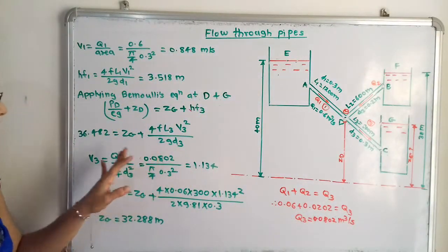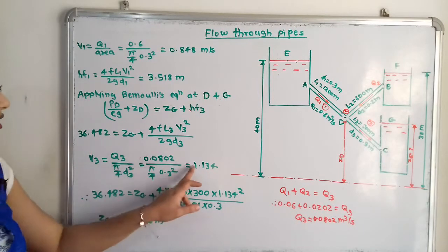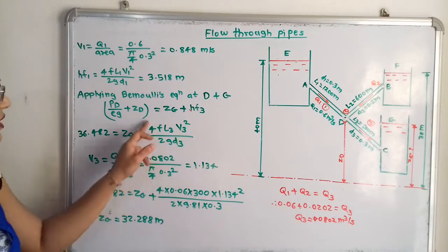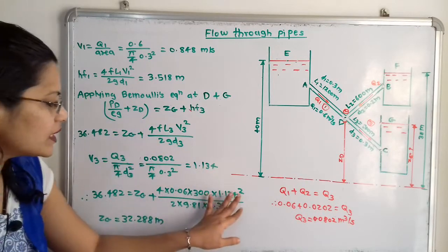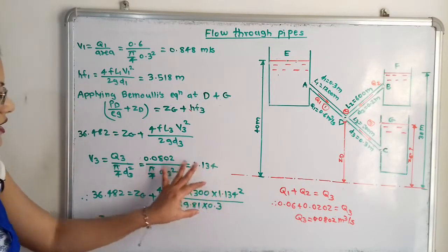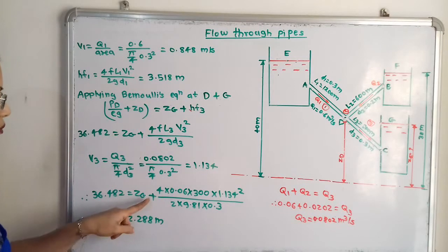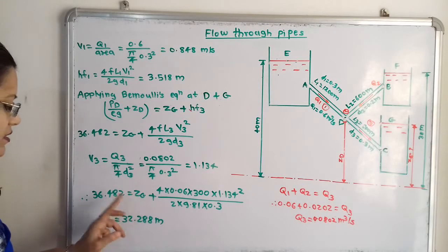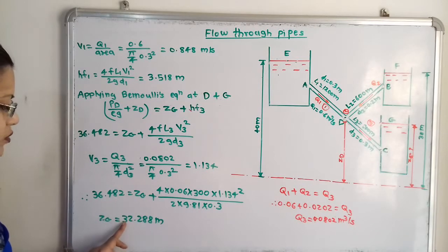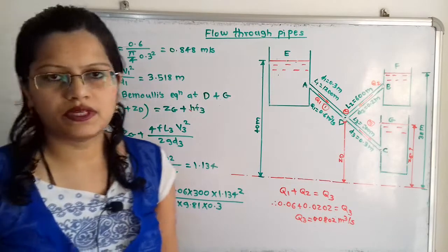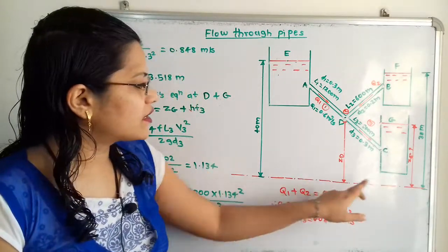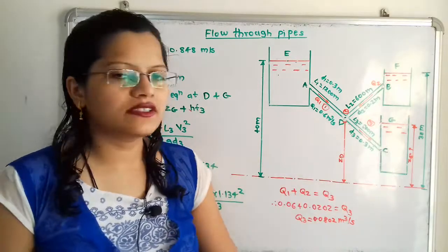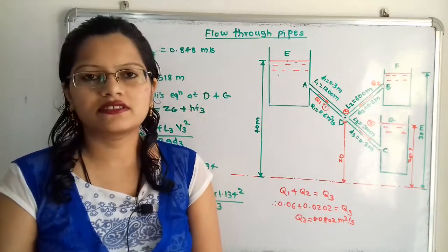Using V3 = 1.134 m/s in the Bernoulli's equation: piezometric head at D (36.482 m) = Z_G + HF3. Solving, Z_G = 32.288 m. This is the height from the datum line to the free surface water level in reservoir C, and this is the final answer.